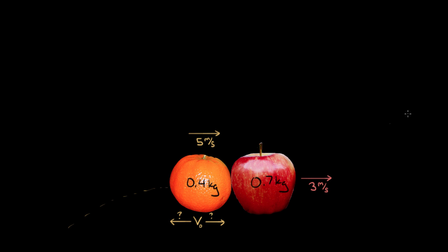We can do this using conservation of momentum. Conservation of momentum says that if there's no external impulse on a system — and our system here is the orange and apple — if there's no external impulse on these fruit, then the total momentum before the collision equals the total momentum right after. It's important that we consider right before and right after — not when the fruit was thrown, and not after the apple gets back down to the ground. For most collision problems, you want to consider right before and right after the collision.